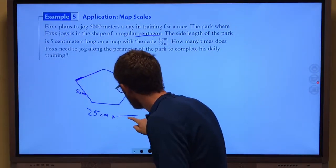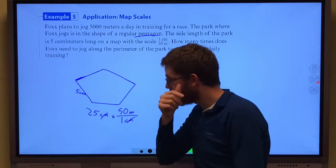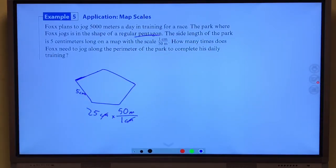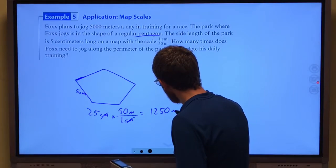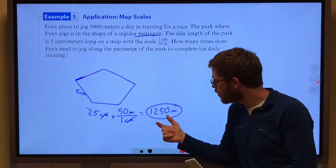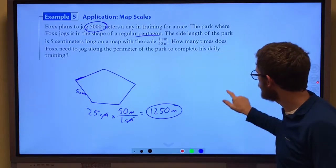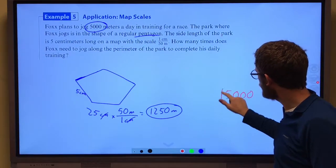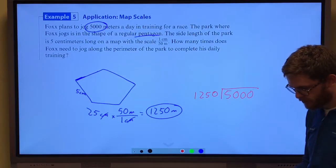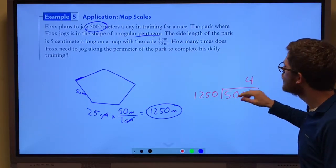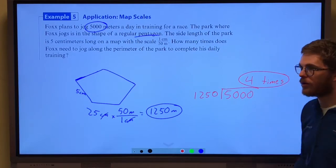But we know for every 1 centimeter there's really 50 meters. So how many meters is this? Well, there's 1 centimeter for every 50 meters. 25 times 50 is 1,250 meters. So one time around the park is 1,250 meters. We want to know how many times it's going to take to go 5,000 meters. So we're going to take 5,000, we're going to see how many times 1,250 goes into 5,000. It's four times. How many times he needs to jog four times around that park to go 5k.